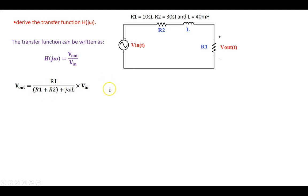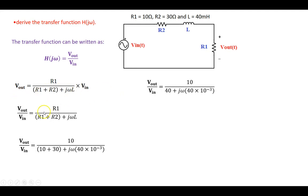Bringing Vin to the left-hand side, we get Vout over Vin equals R1 divided by R1 plus R2 plus j·omega·L. Filling in R1 equals 10 ohms, R2 equals 30 ohms, and L equals 40 millihenry, which is 40 times 10 to the power of minus 3, we get Vout over Vin equals 10 divided by 40 plus j·omega times 40 millihenry. That is our overall transfer function.